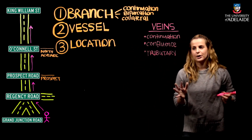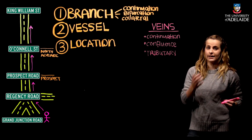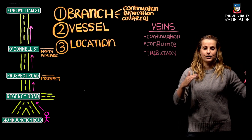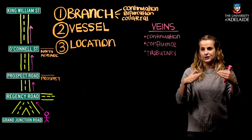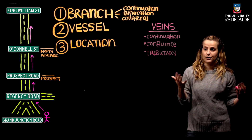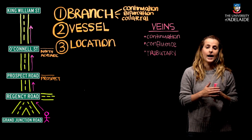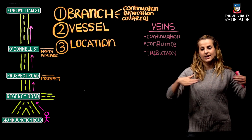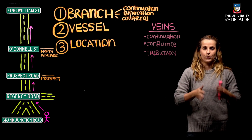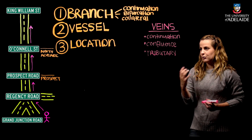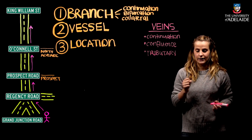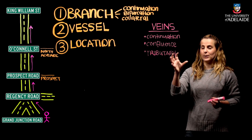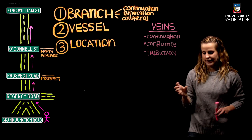The last venous term is a tributary, which is the opposite of a collateral branch — a side road now merging into the main vessel. It's like taking the off-ramp to merge back onto a motorway or highway. Let's look at a quick example in the body to apply this venous terminology to the lower limb.